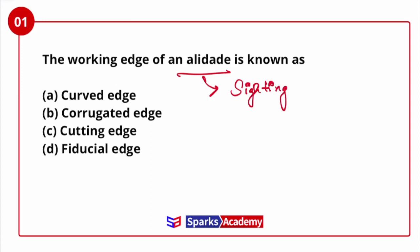We have two types of Alidade: one is plane, and the other is telescope. A sighting instrument — suppose at one station, in a flat area where there is no elevation, we go for plane Alidade.